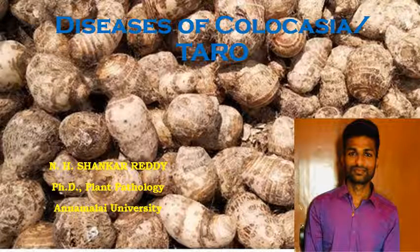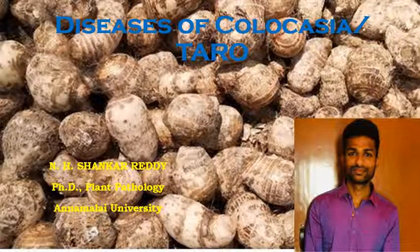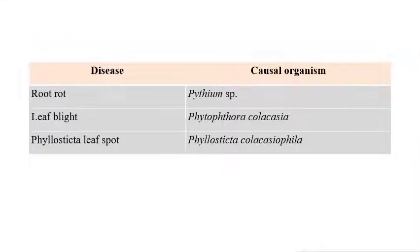Diseases of Colocasia or Taro. My name is Enidh Shankaradi and I am doing PhD in Plant Pathology at Annamalai University. The important diseases in Colocasia or Taro are: root rot, leaf blight, and Phyllosticta leaf spot. Root rot is caused by Pythium species, leaf blight is caused by Phytophthora colocasiae, and Phyllosticta leaf spot is caused by Phyllosticta colocasiophila. Now we will see each one in detail.